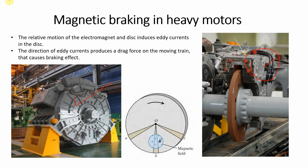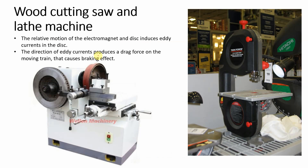The relative motion of electro magnet and disc induces eddy current in the disc۔ Direction of eddy current produces a drag force on the moving disc that causes braking effect۔ Eddy current relative motion سے produce ہوتا ہے electromagnet اور disc کے درمیان، اور جو eddy current ہیں وہ ایک drag force produce کرتے ہیں جس کی direction disc کی motion کے against ہوتی ہے، جو breaking effect cause کرتی ہے۔